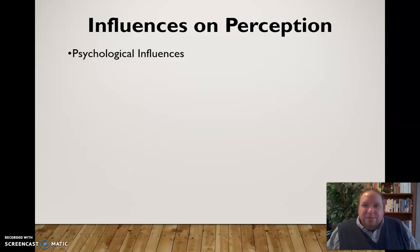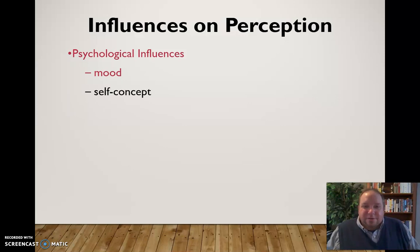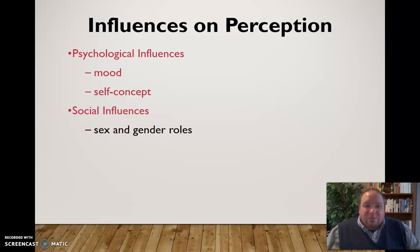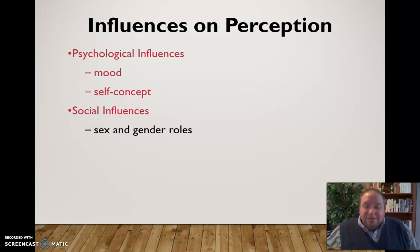Other influences on perception include our psychological influences — things like our mood and self-concept — which will certainly affect our view and perception of things. Some social influences, including things like sex and gender roles and how we perceive those, will also affect our perception. Should men be doing this? Should women be doing this? Our perception of sex and gender roles will affect our perception of the world around us.